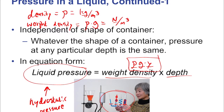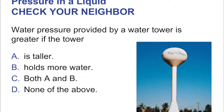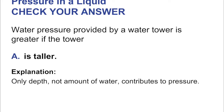Water pressure provided by a water tower is greater if the tower is taller — that's all that matters. The pressure is independent of the actual size of the tower. The only thing that sets the pressure of that water tower is its height. The amount of water might be useful for having a better reservoir during a drought, but the amount of water does not affect the pressure at all.